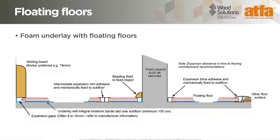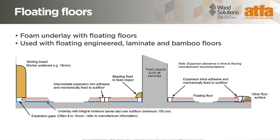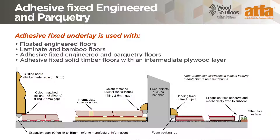This diagram shows factors to consider when installing a floating floor that requires acoustic performance, showing normal practices and components where the underlay may be changed to one providing better acoustic performance. The same method is often used with floating, engineered, laminate and bamboo floors. A second diagram shows a system where greater acoustic performance is required, applying to both fixed and floating flooring systems. Key details include: a more substantial acoustic underlay than in the previous diagram; the flooring does not directly contact the skirting or beading at the floor perimeter; and foam backing rods have been used in the expansion voids. In general terms, these methods are used with most floor types including floated floors, engineered, laminate, bamboo and adhesive fixed floors.